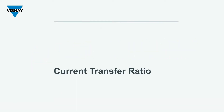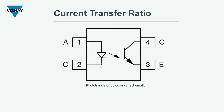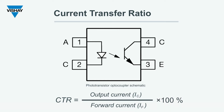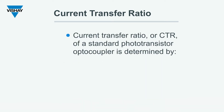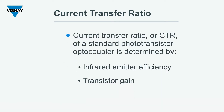Let us first define the current transfer ratio, or the CTR. The CTR is defined as the output current of the phototransistor to the forward current of the infrared emitter. For a standard phototransistor optocoupler, the CTR is determined by the infrared emitter's efficiency, the transistor gain, and the optical coupling. When current flows through the infrared emitter, it irradiates the phototransistor and the phototransistor in turn generates output current.